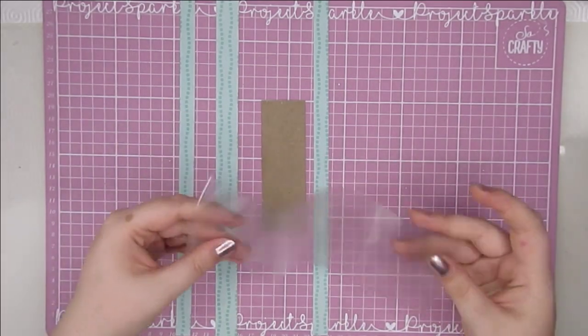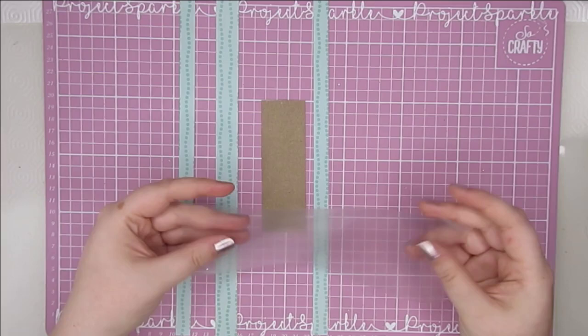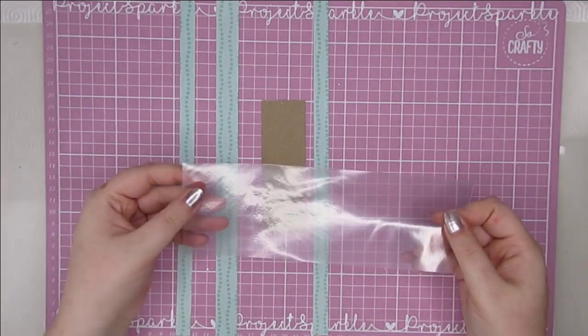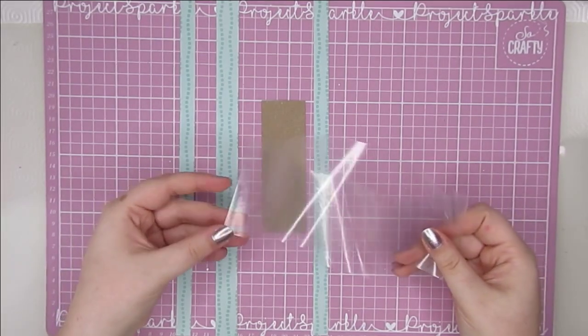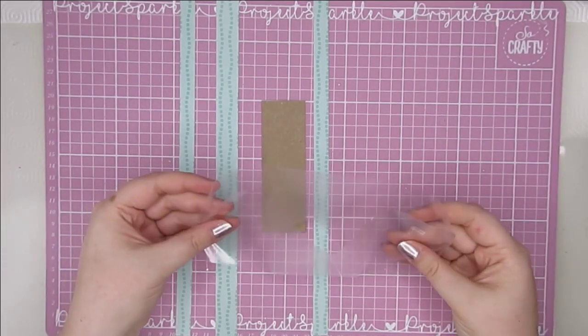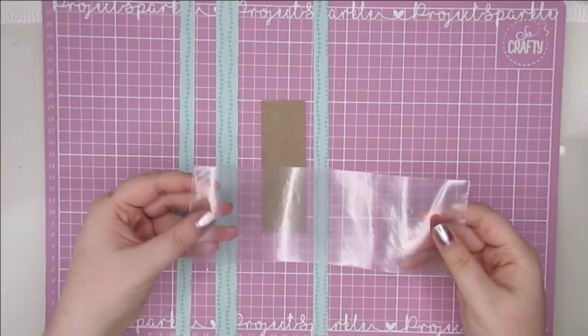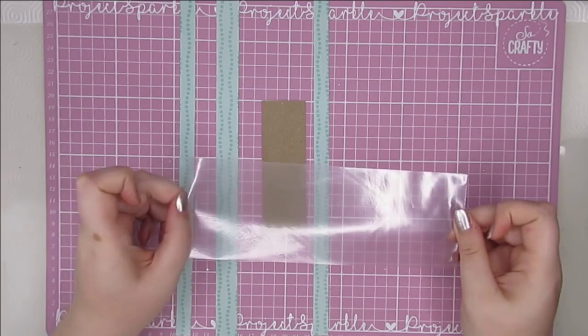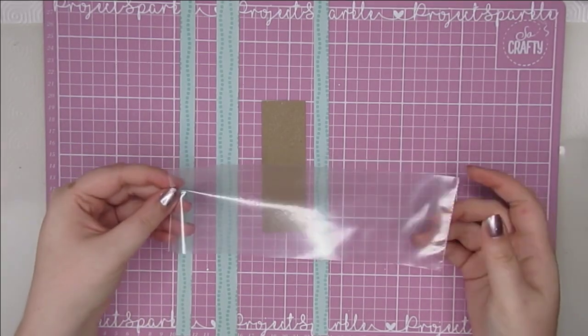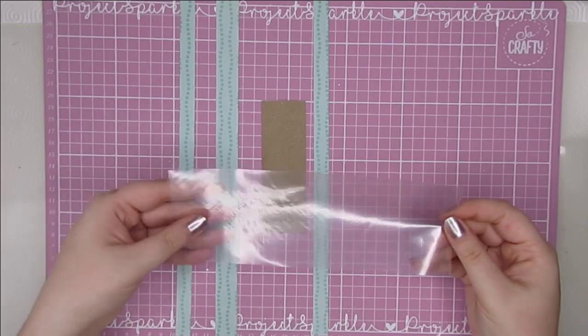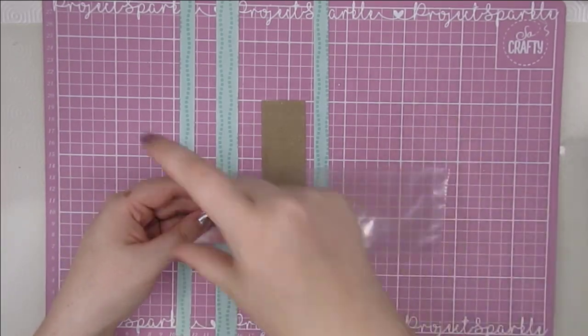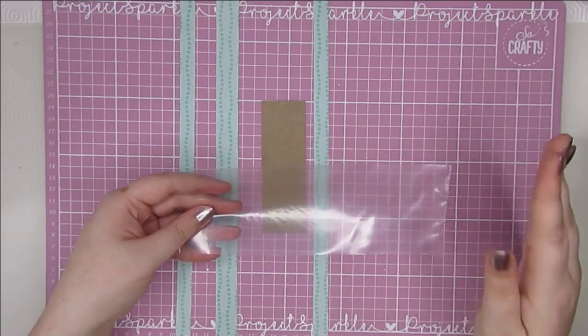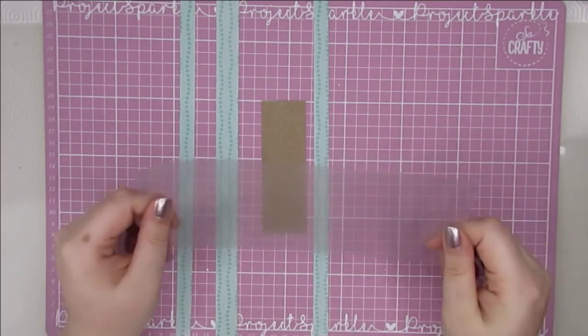All you're going to need is some kind of clear element to make your shaker. You could use acetate, you could use vellum if you didn't want it to be completely clear. I have got one of these page protectors. This is just a standard document wallet. You don't need the fancy project life ones but those ones will work as well. For the smaller size that I'm making, this 8 by 3 inch piece works perfectly. I chose 8 inches across because these are A4 document wallets and it meant I could slice them this way, sort of portrait if that makes sense, so that I could get more out of each sheet.